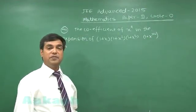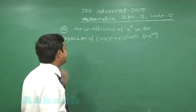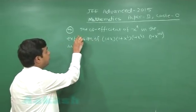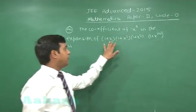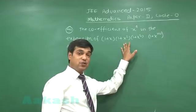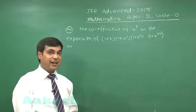Now, the turn to go for Paper 2 of JEE Advanced 2015 Mathematics, Code 0. Find the coefficient of x^9 in the expansion of (1+x)(1+x²)(1+x³)... up to (1+x^100).